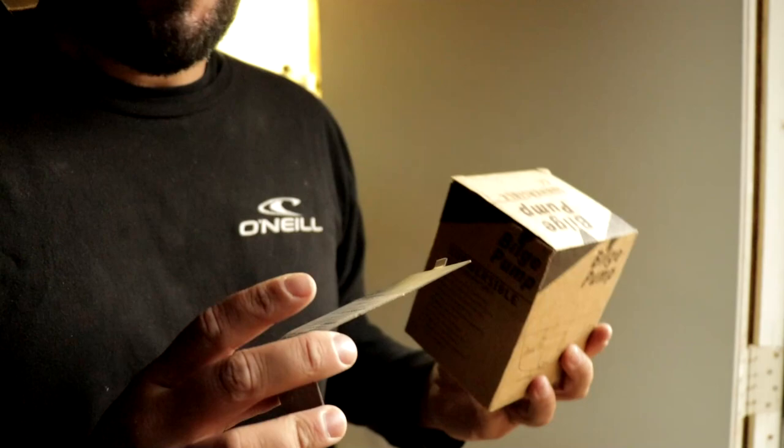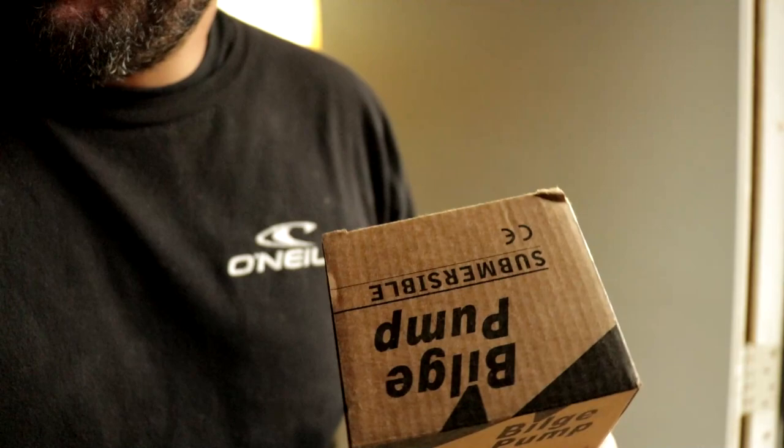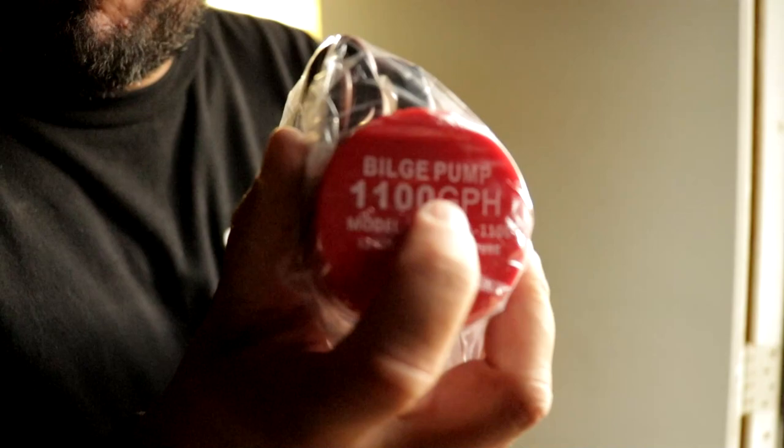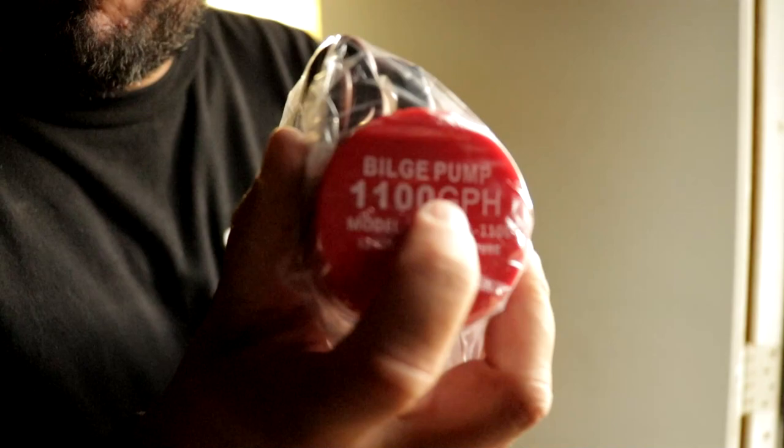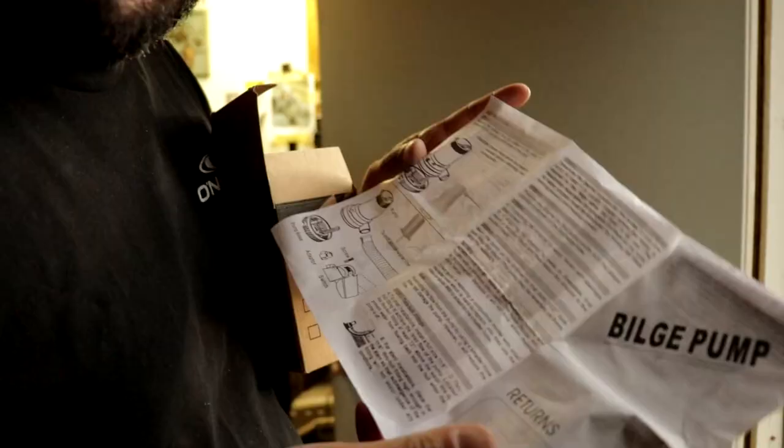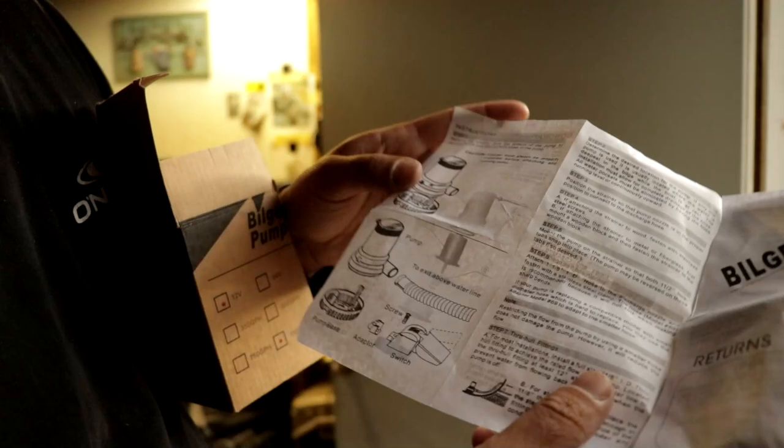So I kind of just assumed that this would work for the bilge pump, but I've never actually opened this up to see how it looks. So let's open her up and make sure that fits. This should fit. I got a 1,100 gallon per hour bilge pump. This thing will pump out water in no time. Oh yeah, okay, this is going to be perfect. So we have three slots right here for a screw. Hopefully, let me make sure.